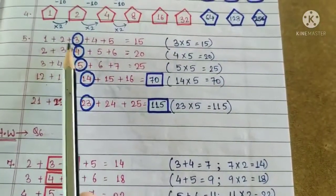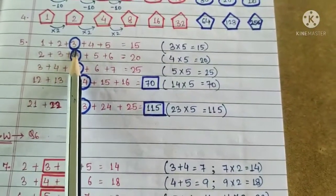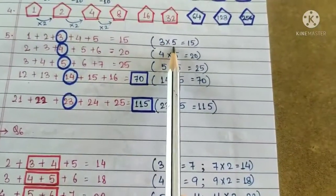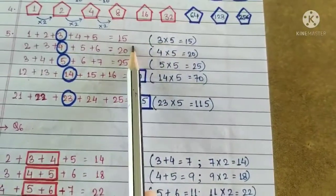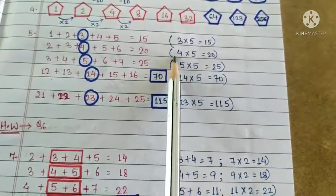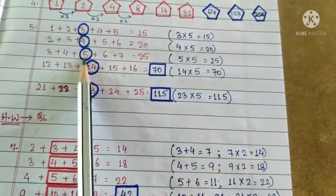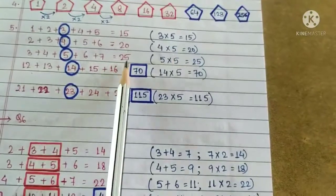Here, if you see, we have got the third number. We multiply it with 5. 3 fives are 15. Again, the third number is 4. 4 multiplied by 5 is 20. In the third one, the third number is 5. 5 multiplied by 5 is 25.